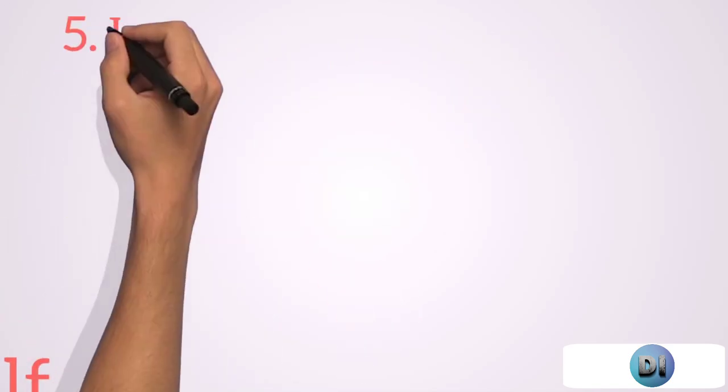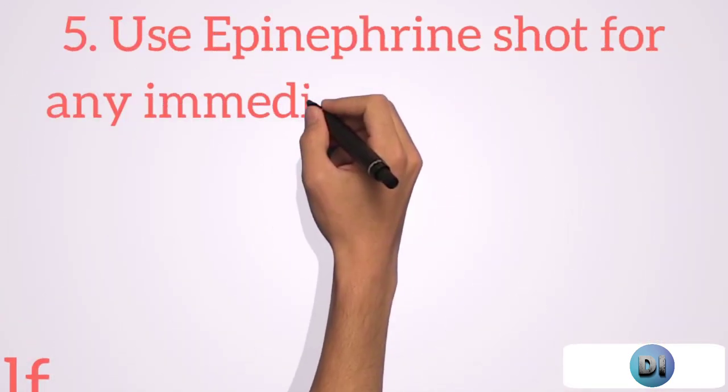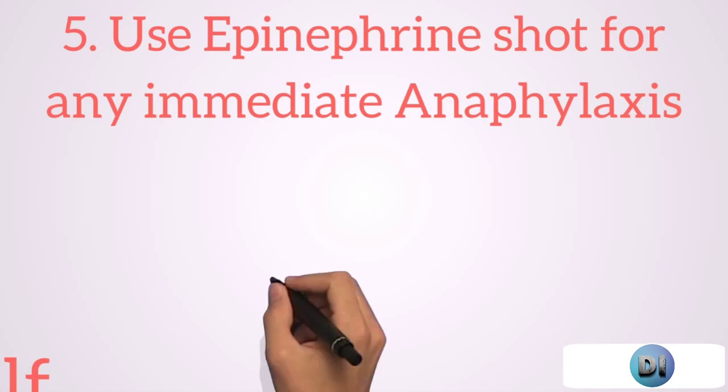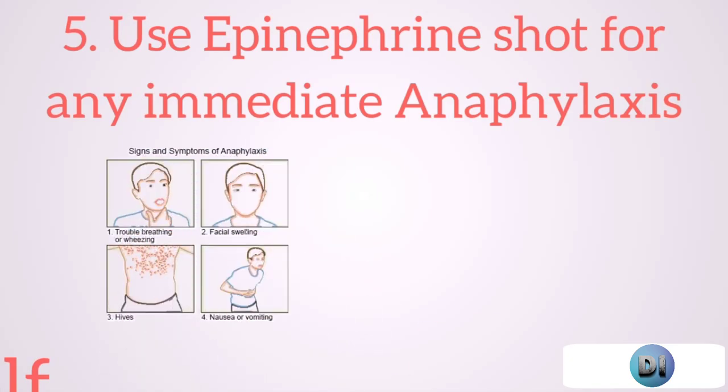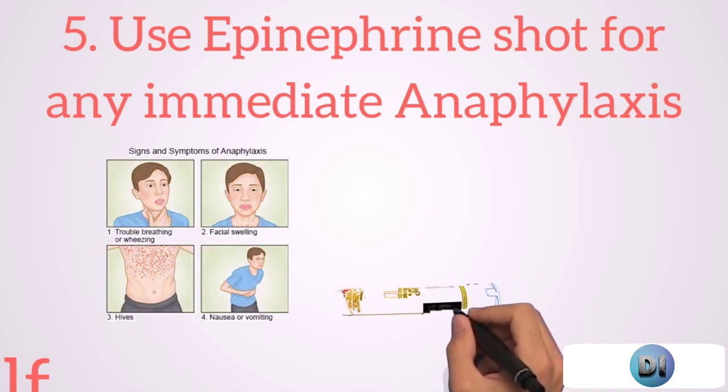Number 5: Use epinephrine shot for any immediate anaphylaxis. If you begin to experience signs of anaphylaxis like swelling of the face, mouth, or throat, hives, difficulty breathing, or vomiting, use an epinephrine auto-injector like EpiPen if you have one.